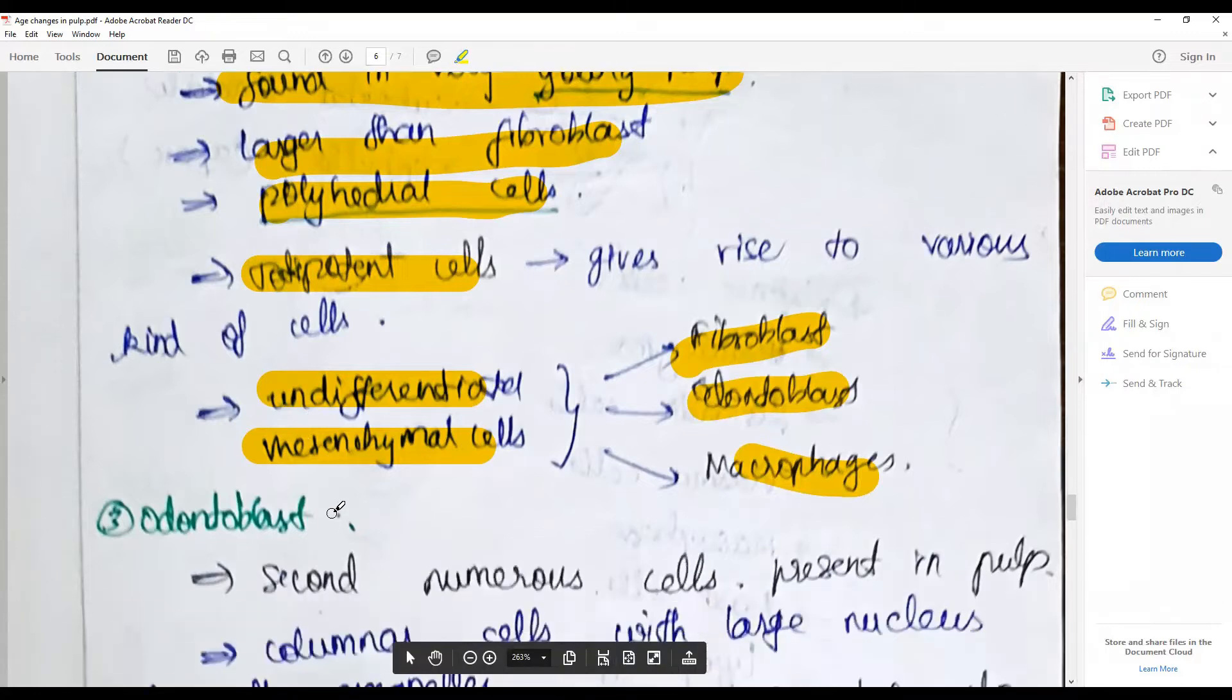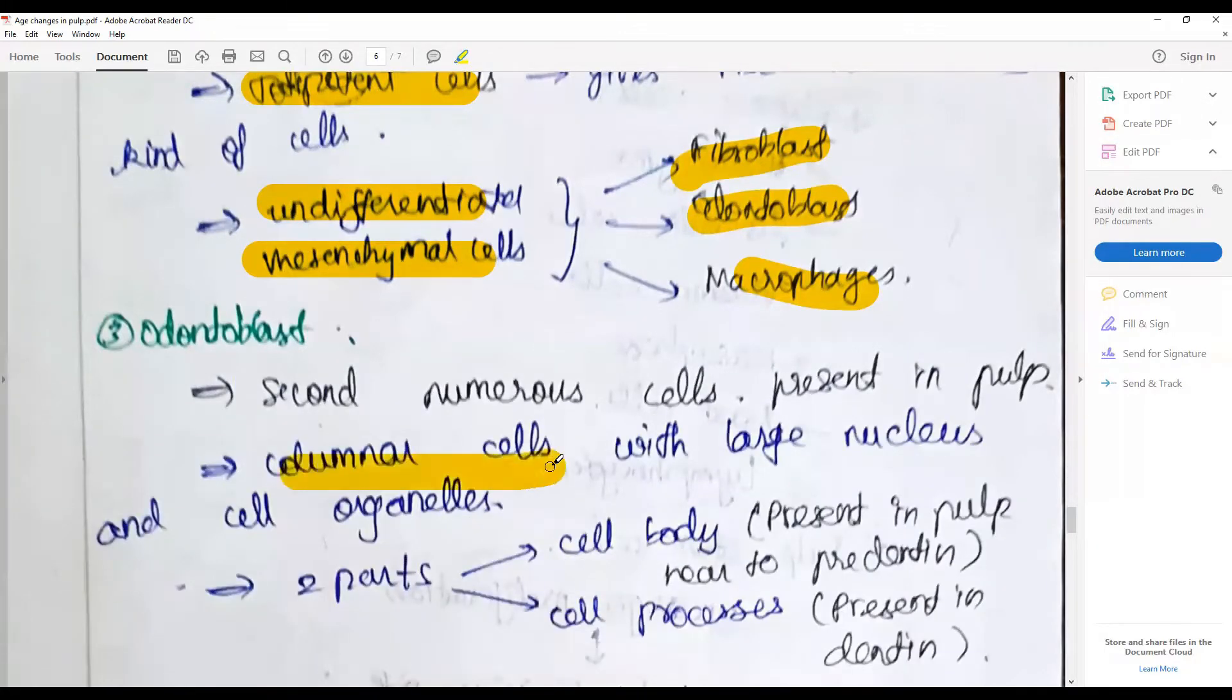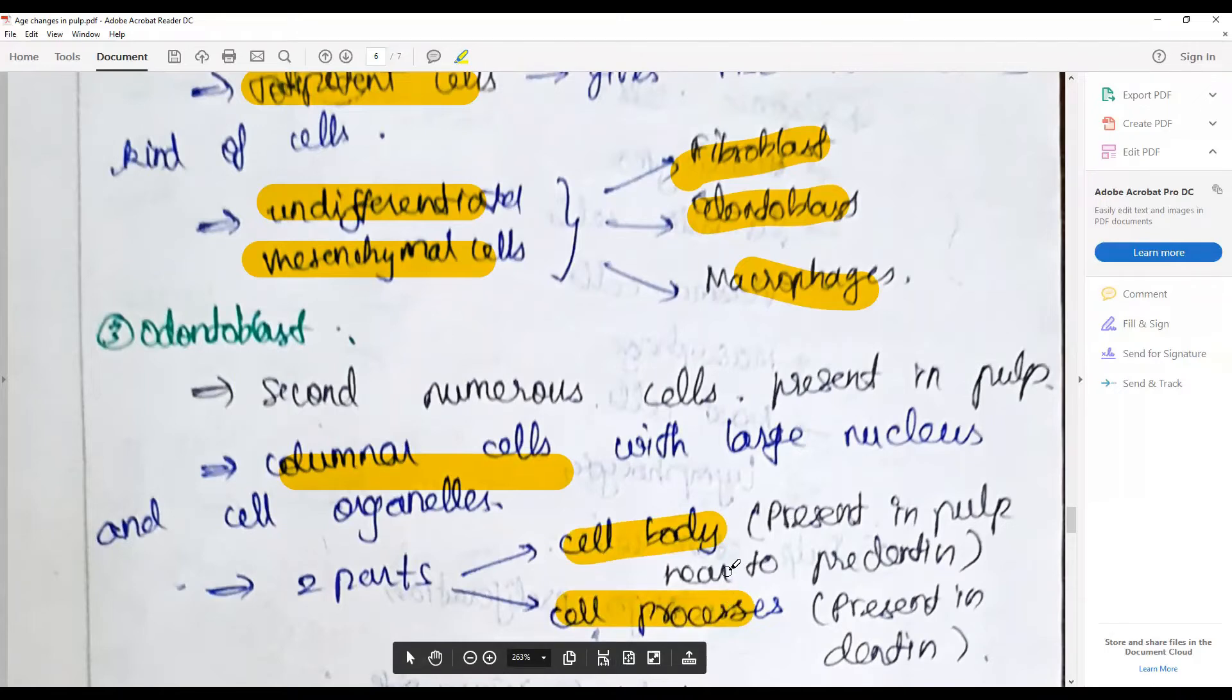Odontoblasts are the second most numerous cells present in the pulp. They are columnar cells with large nucleus and cell organelles. They have a cell body and cell process. The cell body is present in the pulp nearer to the predentin.